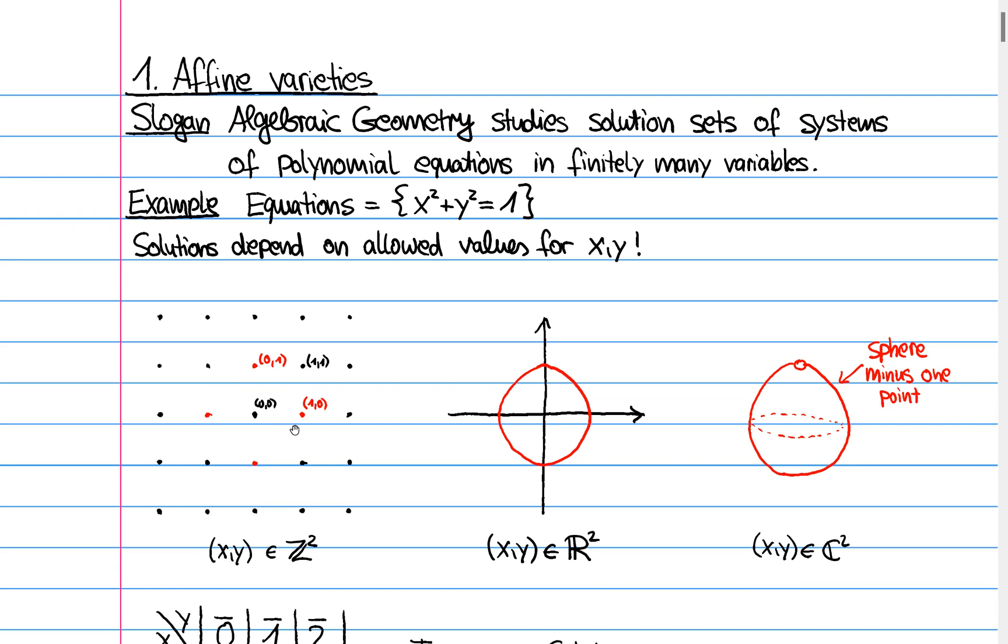That's one possibility. We can be a bit more generous and we can say maybe we allow real values for x and y. And then this is the classical picture that one knows maybe from school that the solution set just exactly gives the unit circle in the plane around the origin like this.